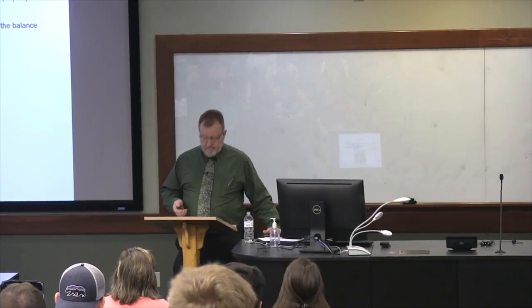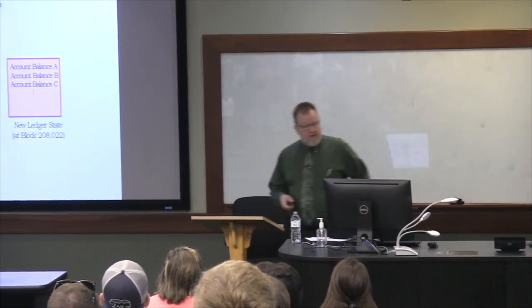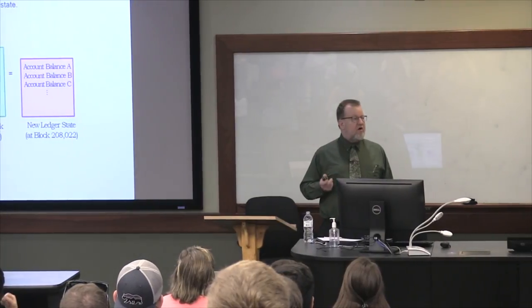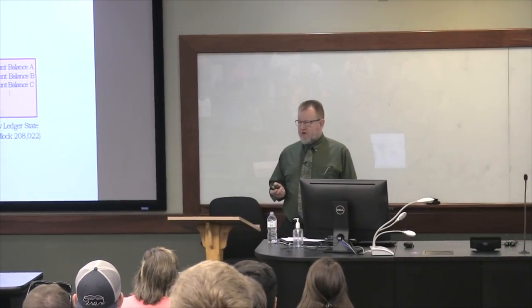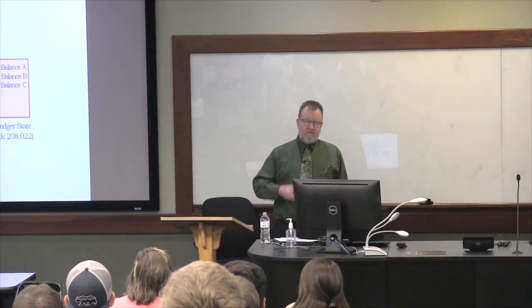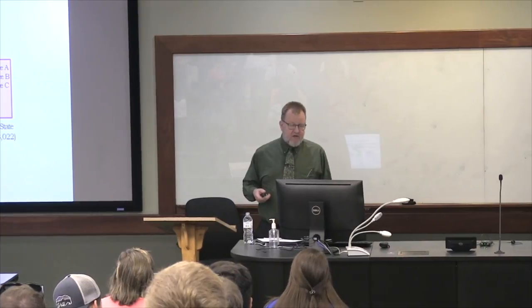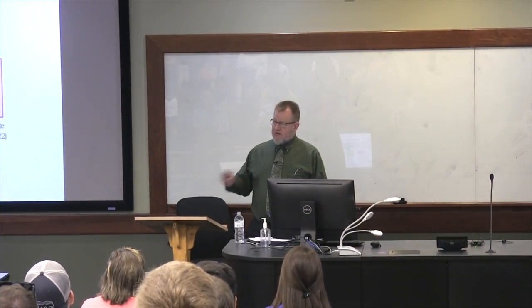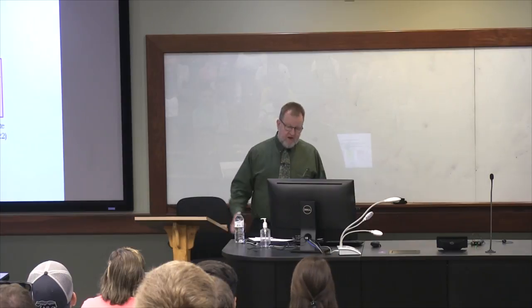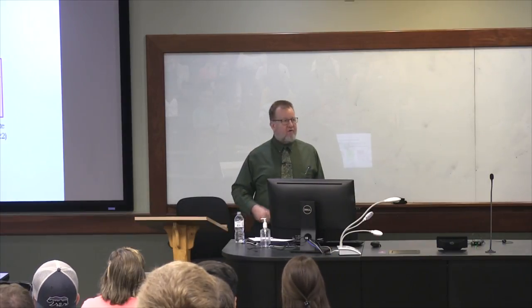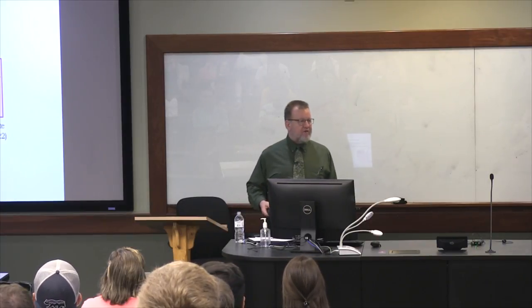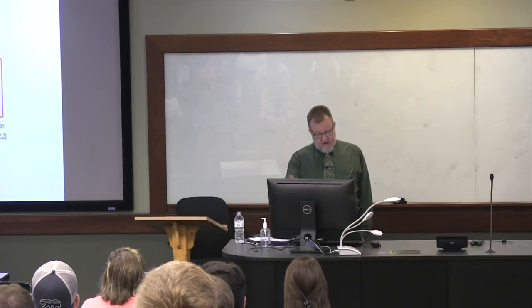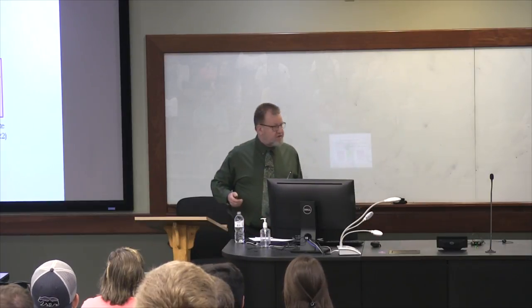A blockchain is really what we call a state transition machine. You have a current state, which is the ledger state, and you have transitions — transaction requests. You validate the transaction requests, you add them to the current ledger, and you get the new ledger state. And that's what blockchain is all about.